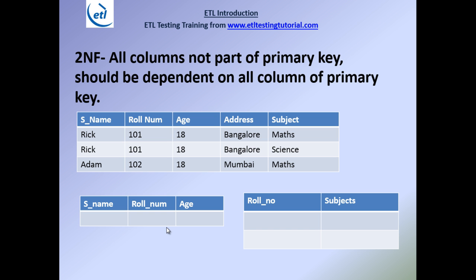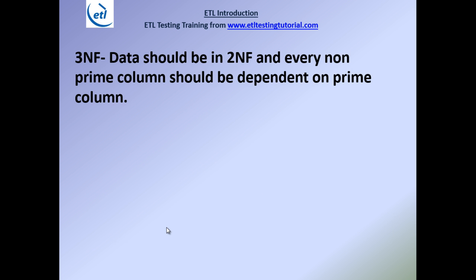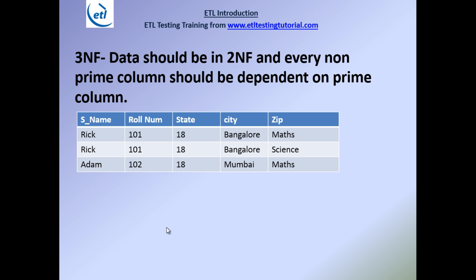Now the third normal form — data should already be in second NF. Each successive normal form requires all prior forms to be satisfied first. So third NF requires first and second NF to both be satisfied. The third normal form says data should be in second NF, and every non-prime column should be dependent on the prime column only.